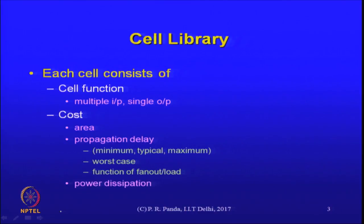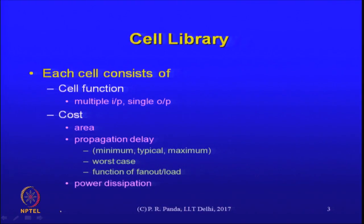There are two inputs: one is the optimized logic network that we came up with, but the other important input is a cell library, where each cell consists of information useful to us in making decisions. The function of that cell has to be captured in some way, so that when we see some logical gate, we know whether this cell is suitable for it. We can assume these are simple multiple-input cells with a single output, but various parameters can be included that help in various synthesis decisions.